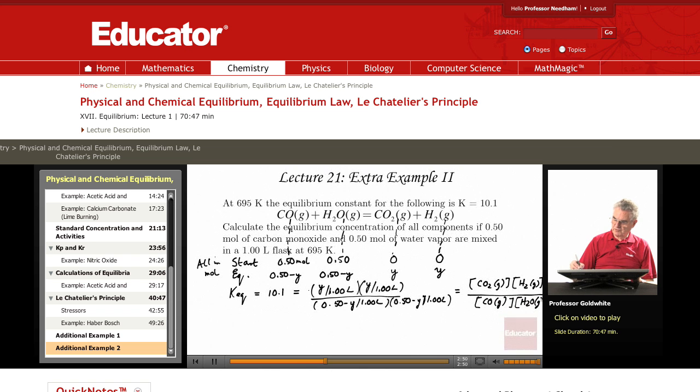As you see, the form of the equilibrium constant is familiar: products over reactants. Once again the volume cancels out in this particular instance. And we have that y squared over (0.50 minus y) all squared equals 10.1.